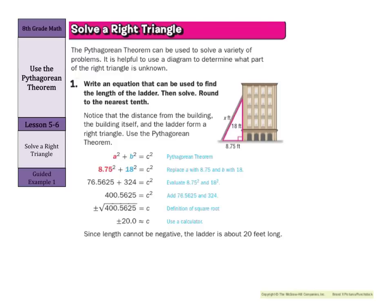Now, the Pythagorean theorem can be used to solve a variety of problems. It is helpful to use a diagram to determine what part of the right triangle is unknown. Remember, you can't just assume that everything is A and B, and you're just going to add those together, square them, and do your little thing, and take the square root at the end.